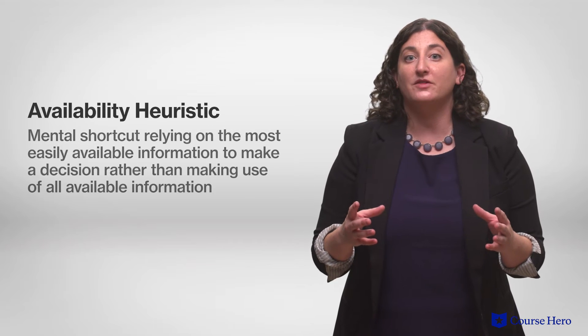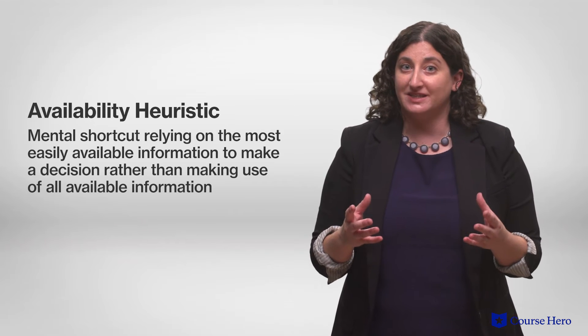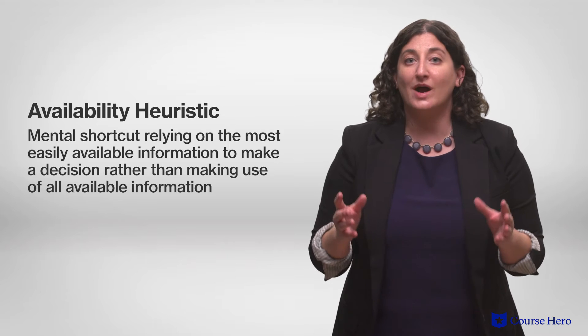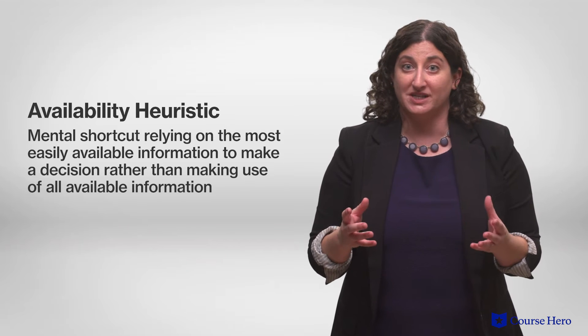The availability heuristic involves relying on the most easily available information to make a decision, rather than making use of all available information. For example, people assume that there are more English words that begin with K than words that have K as a third letter, because it's far easier for them to think of words that begin with K.